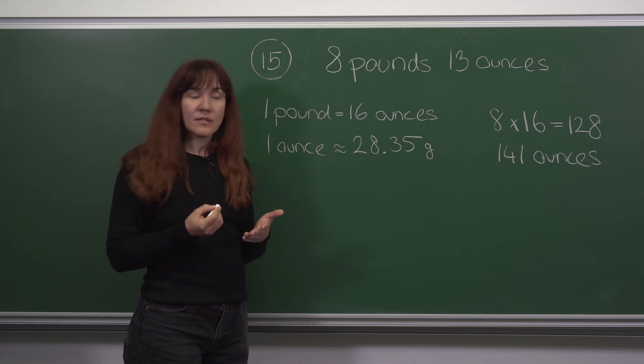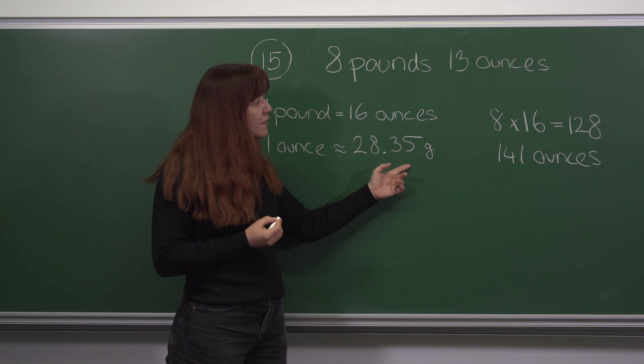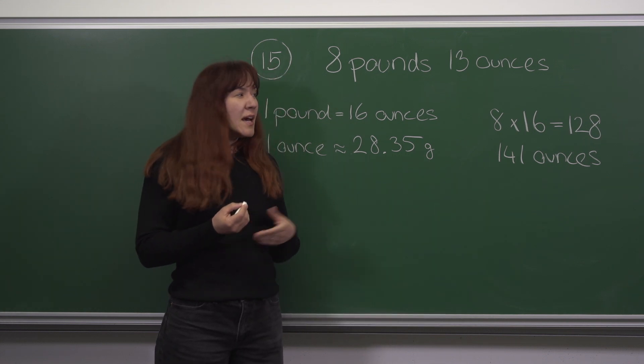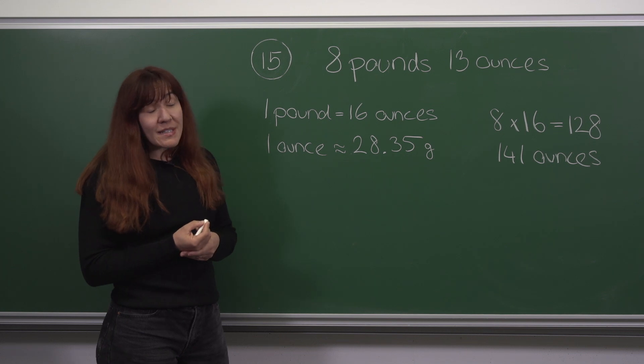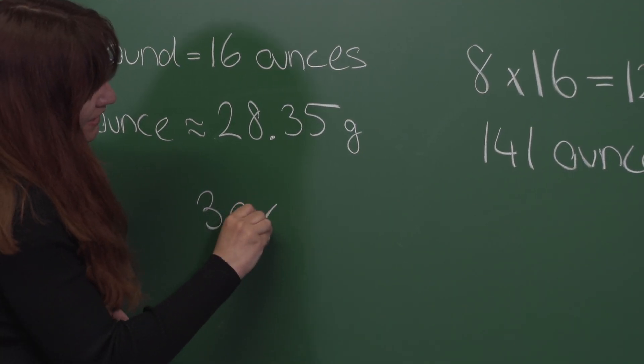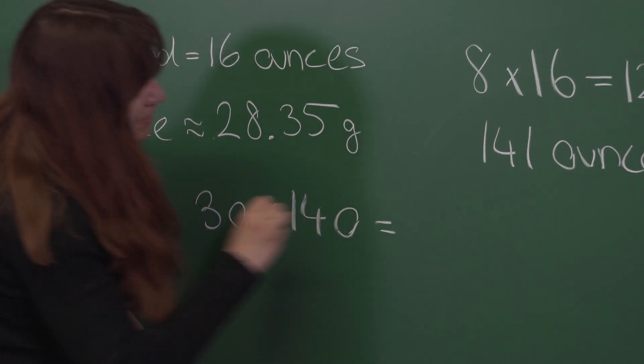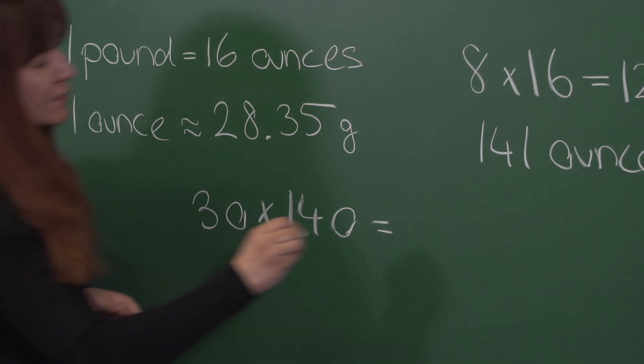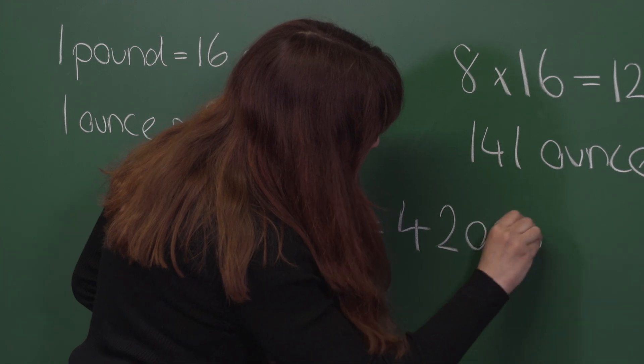Now to find the weight in grams, we would need to multiply 28.35 with 141. We don't necessarily want to do that multiplication because we only need an estimate for the weight. A reasonable rounding would be 30 times 140, which we can find is 4200 grams.